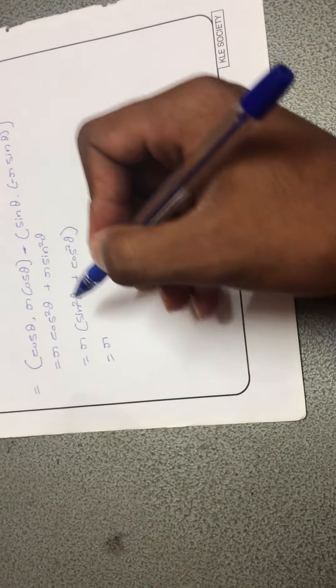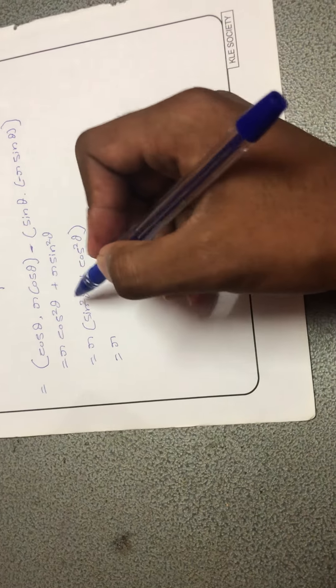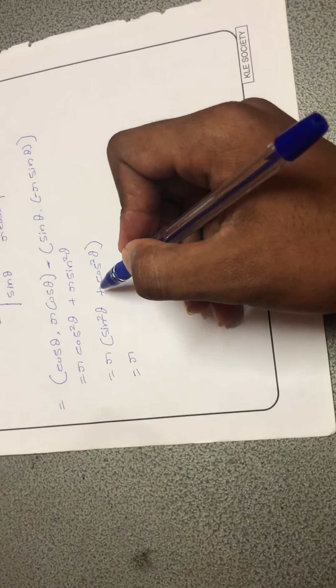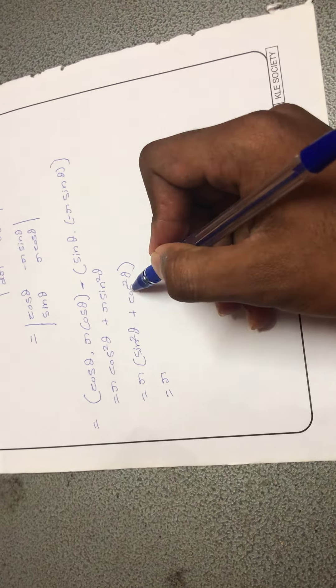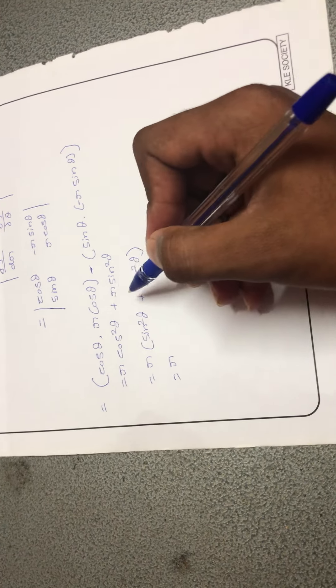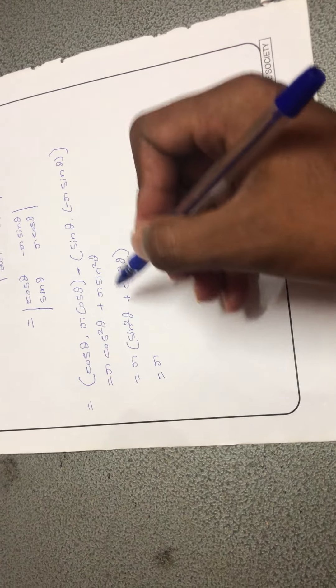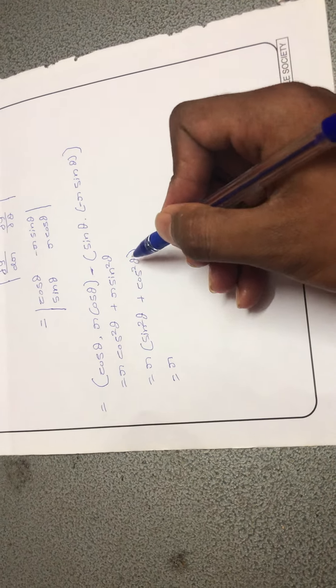Then we take a common of r and we make a trigonometry identity equation. So we take a common of identities like cos square theta plus sin square theta, becomes sin square theta plus cos square theta.